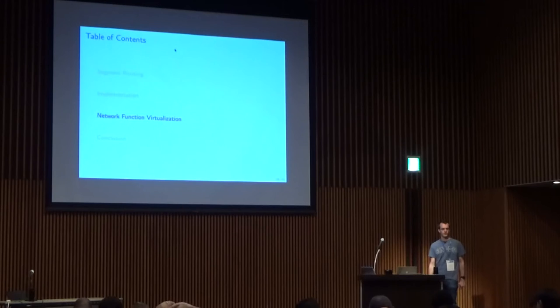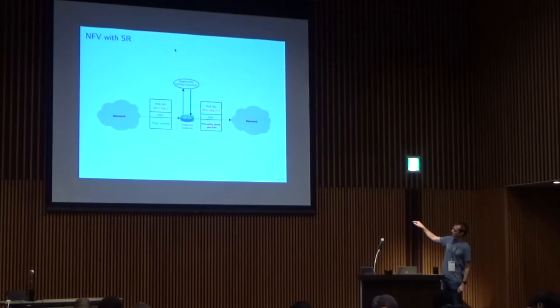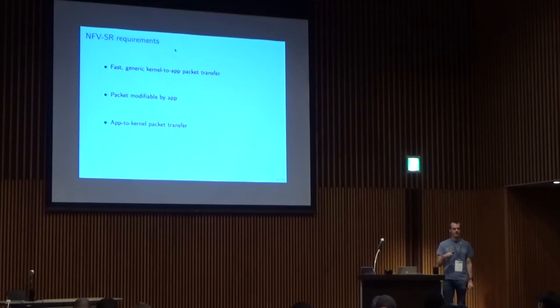As part of advanced use of segment routing, we have the service segment which is more than node or adjacency segments. Service segments enable network function virtualization because it simply means that the packet can go through a given virtual function. The idea is that we have a segment endpoint that acts as the service segment. Instead of just forwarding the packets to the next segment, it will send the packet through a given virtual function that will process and possibly modify the packet and then send the packet back again into the network. We had a whole master thesis dedicated to research about that.